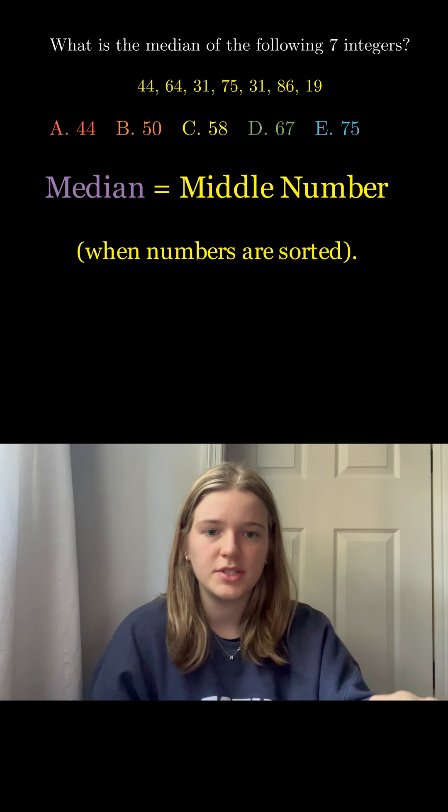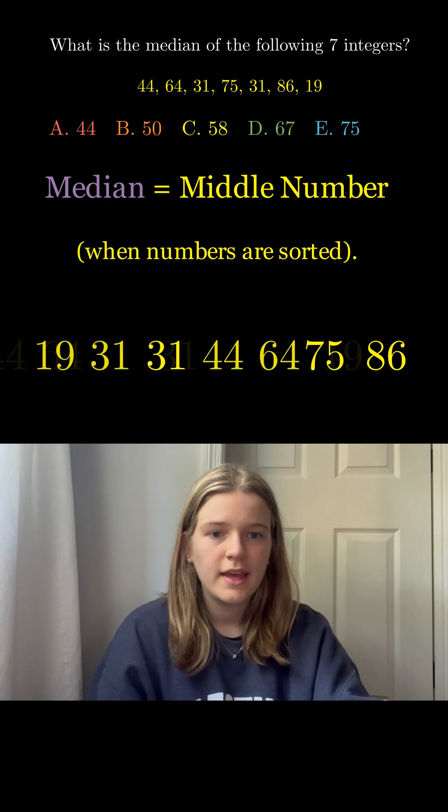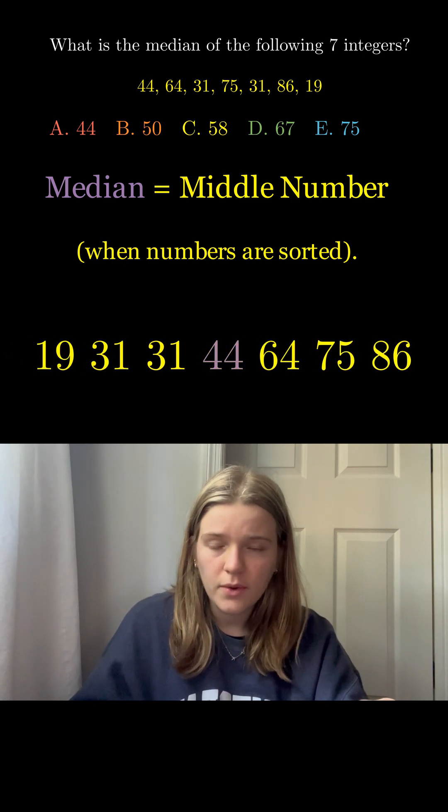Let's take our set of numbers here. One way to find the median is to sort the numbers from smallest to biggest. And as you can see, the median or middle number is 44.